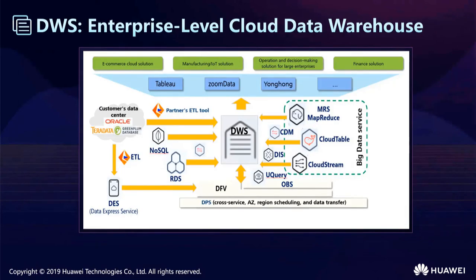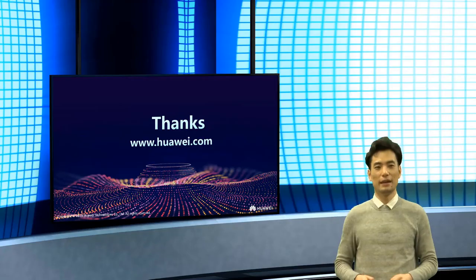This page shows the architecture of DWS — an enterprise-level cloud data warehouse. Through the data express service, it helps enterprises move their data warehouse to the cloud. All big data services can be used to analyze enterprise data, and it provides many kinds of solutions to enterprises, such as e-commerce solutions, financial solutions, manufacturing solutions, and large enterprise solutions.